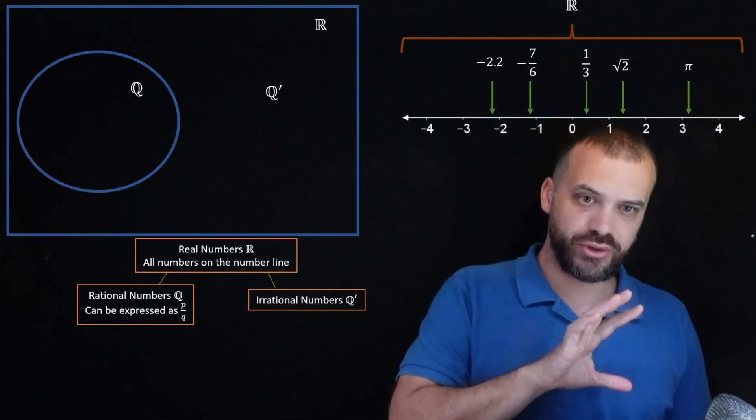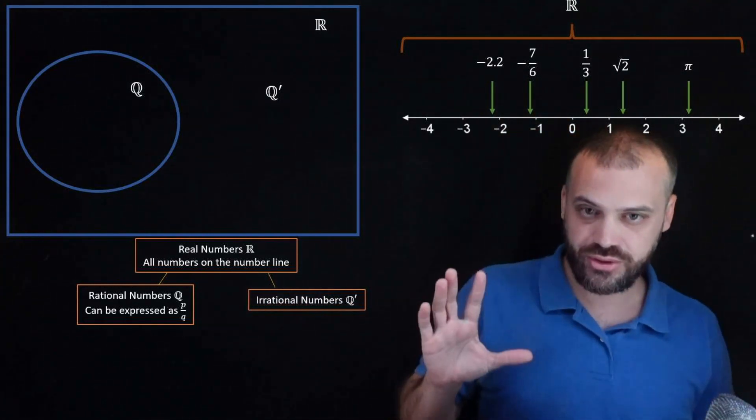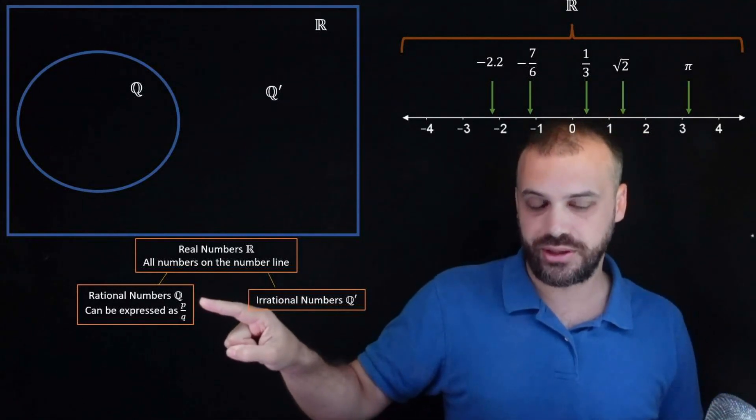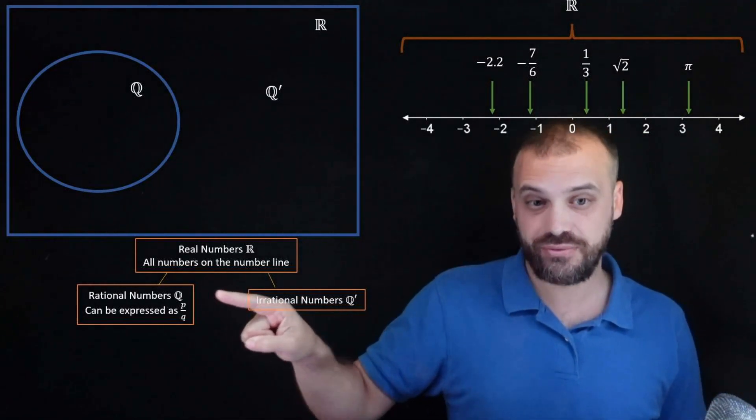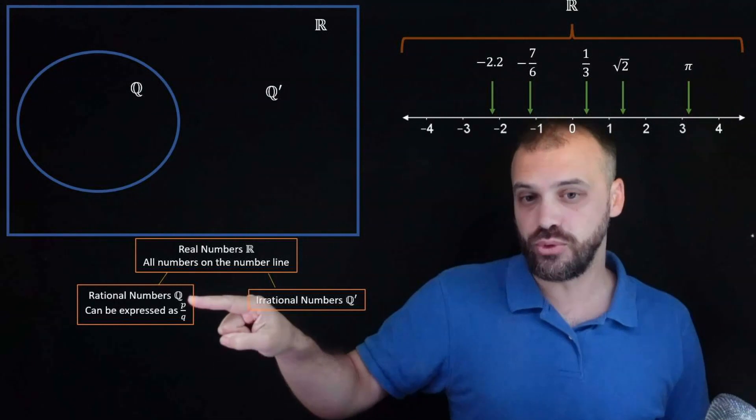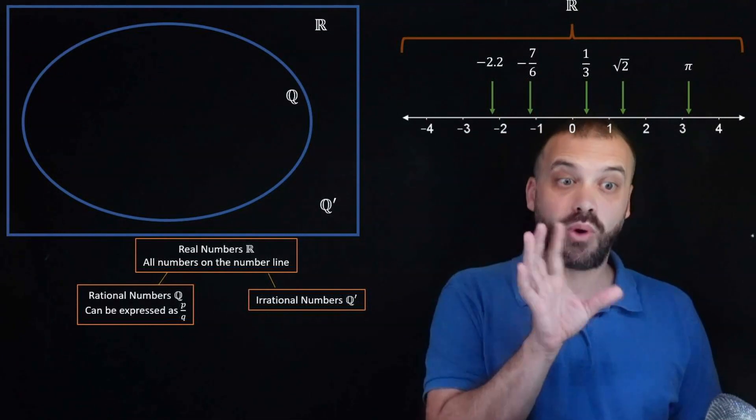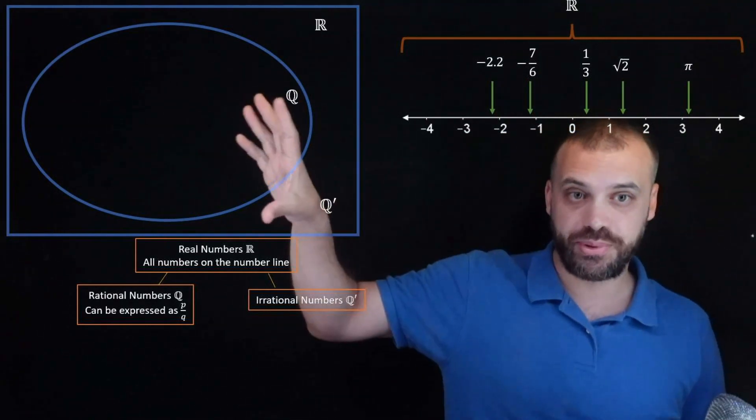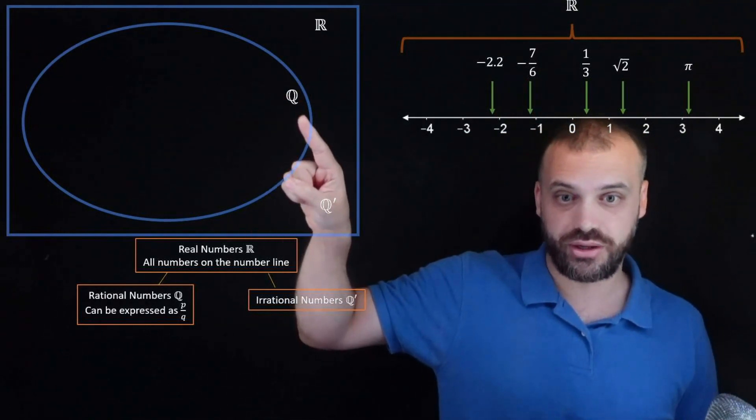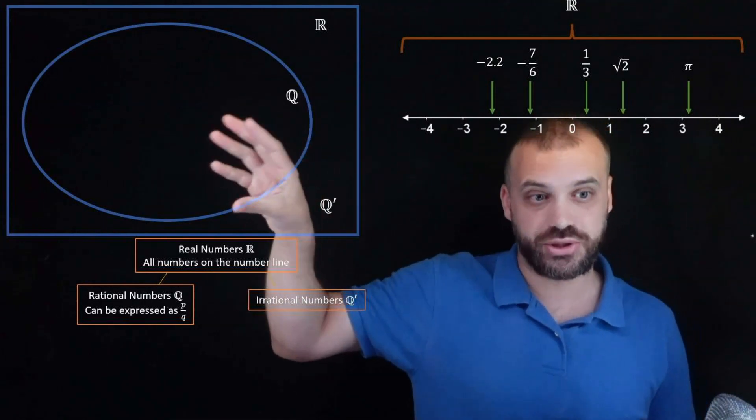That said, for the rest of this video we're going to be talking predominantly about rational numbers. Even though there's way more of these, we're more interested in these rational numbers. All right so let's just change our picture a little bit. Way more irrational numbers but I've got a big circle for my rational numbers here because I'm going to put a bunch of different numbers in there.